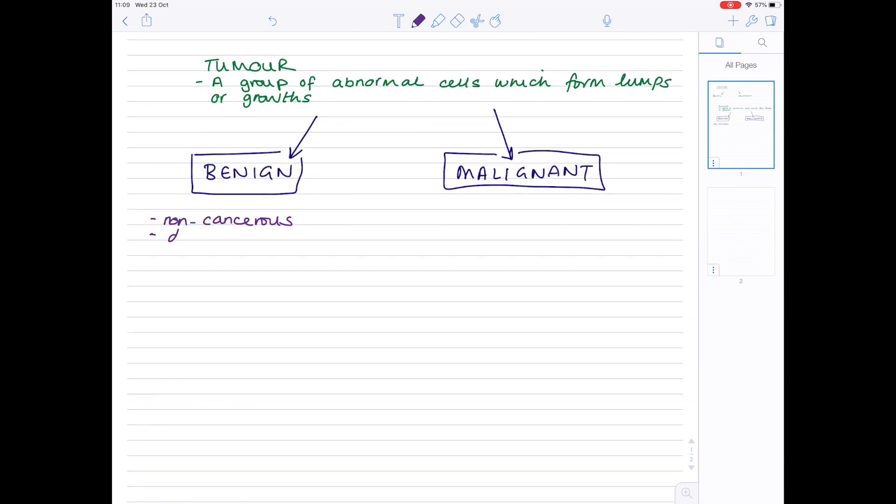Malignant tumors tend to be cancerous, and the reason for this is due to their ability to divide out of control and spread into other tissues.